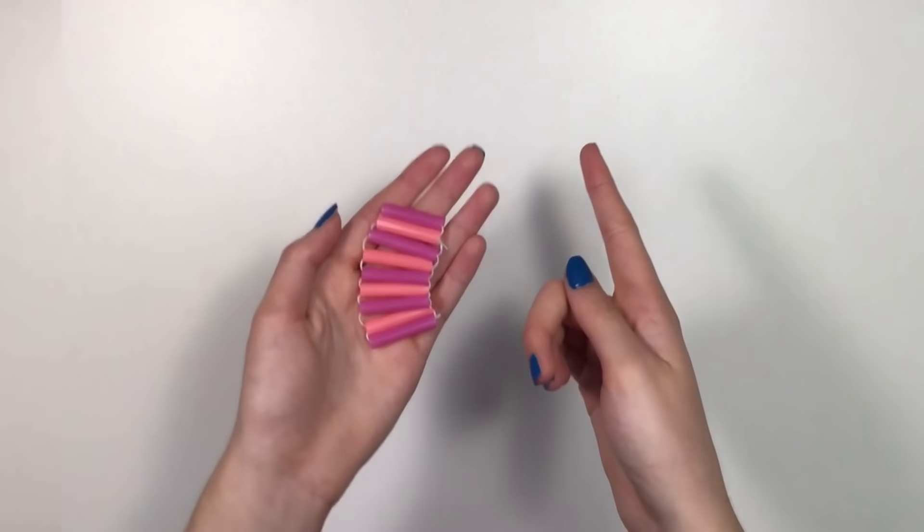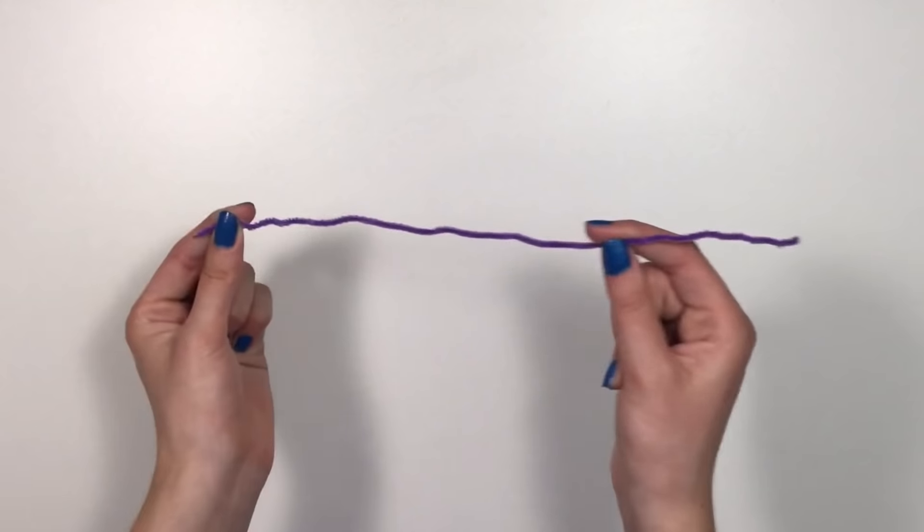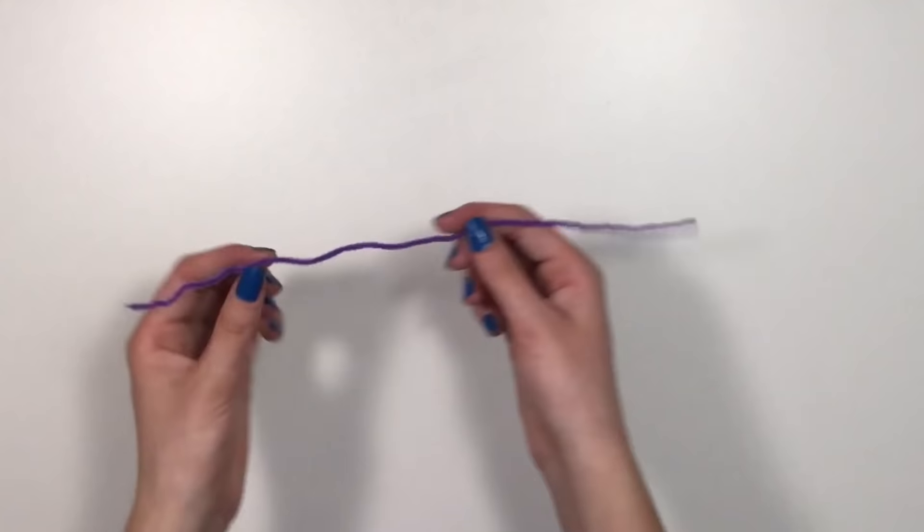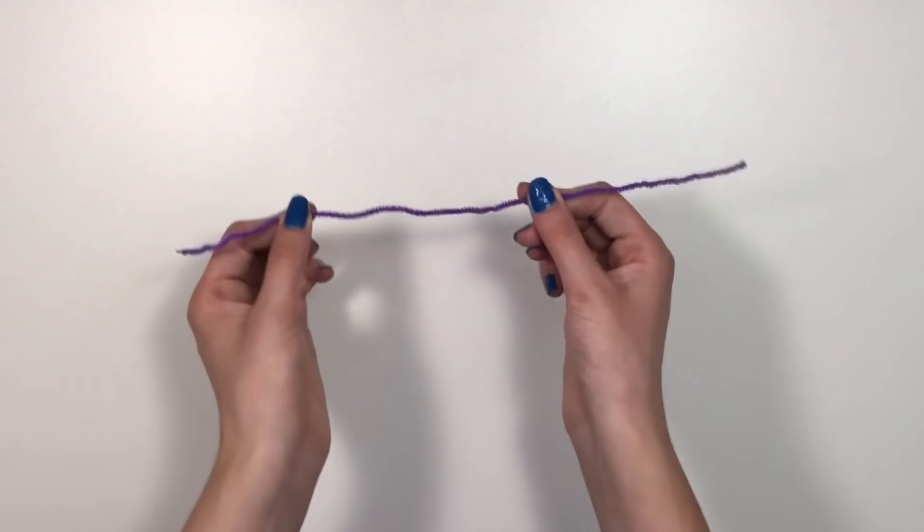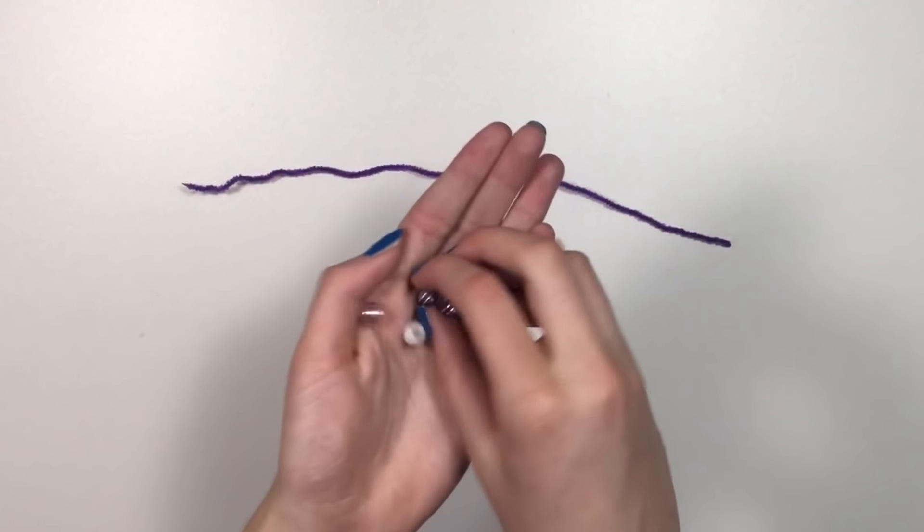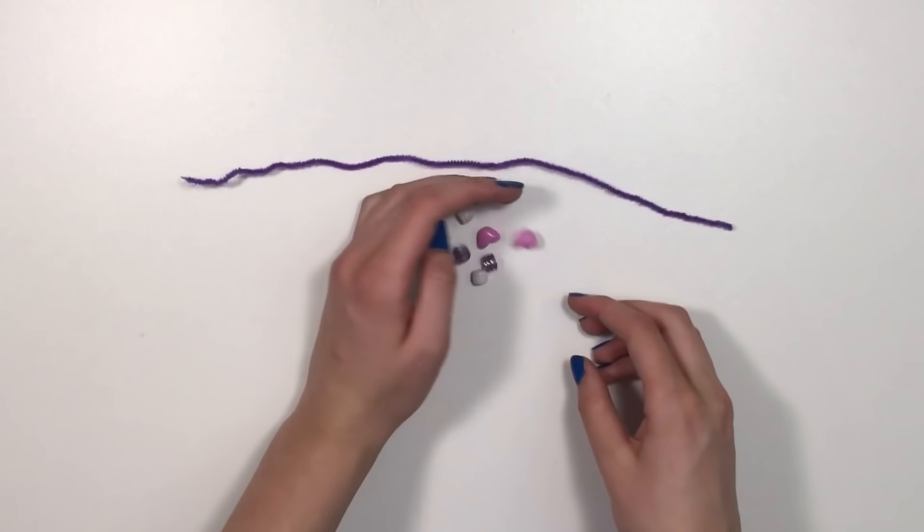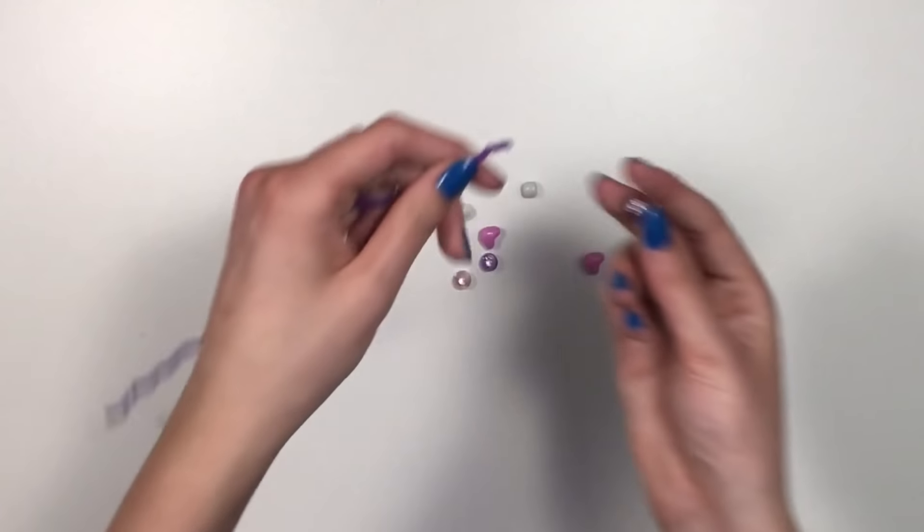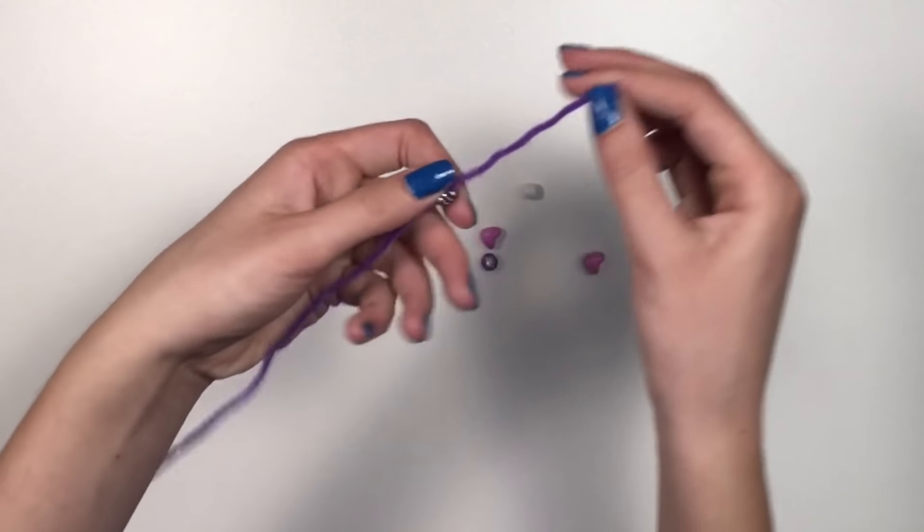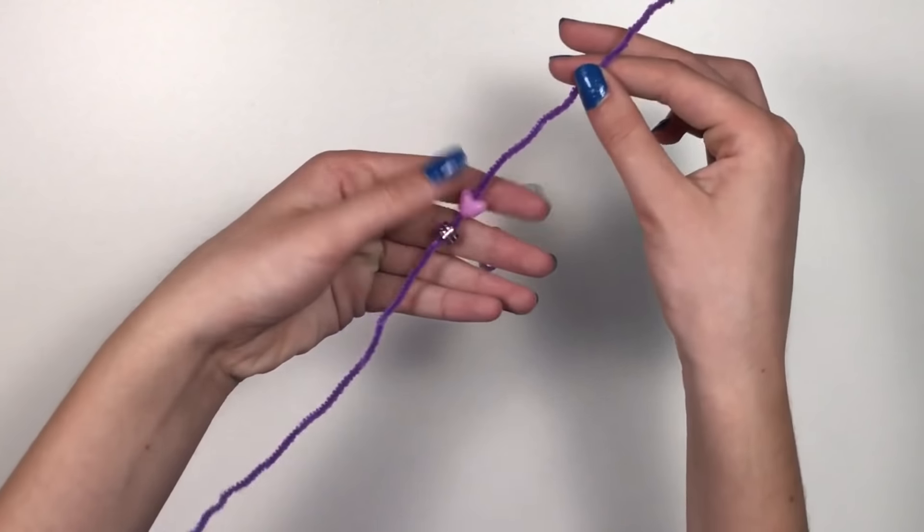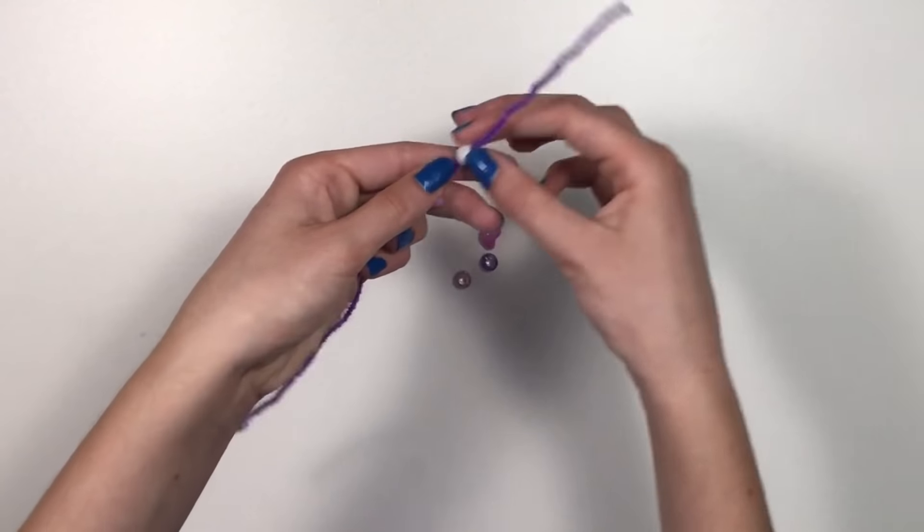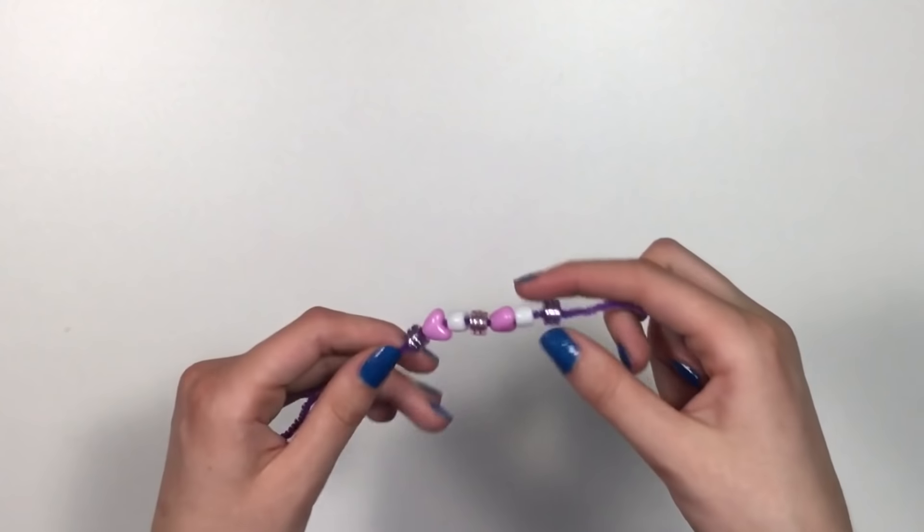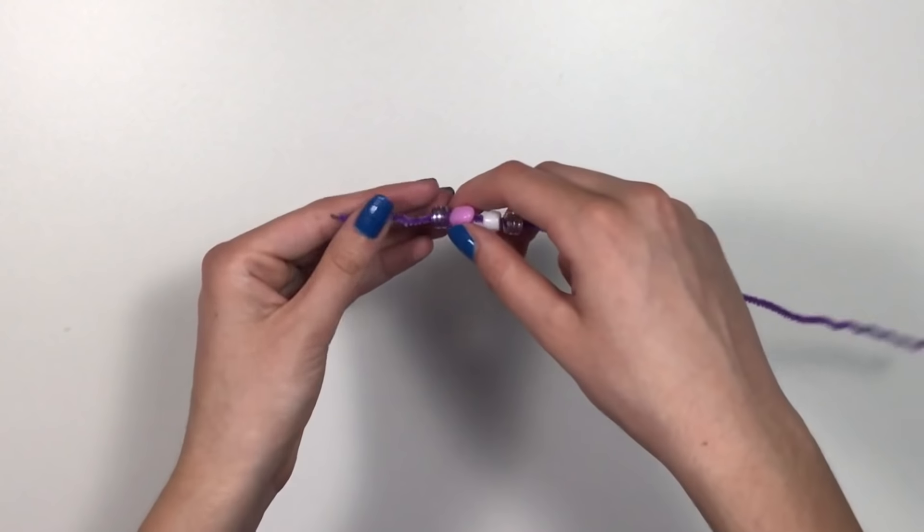Next I'll be showing you guys how to make a bead slider. For this, grab a thin pipe cleaner or some wire. Right here I have this thin purple pipe cleaner. Then grab some beads of your choice and start putting them on your wire or pipe cleaner.